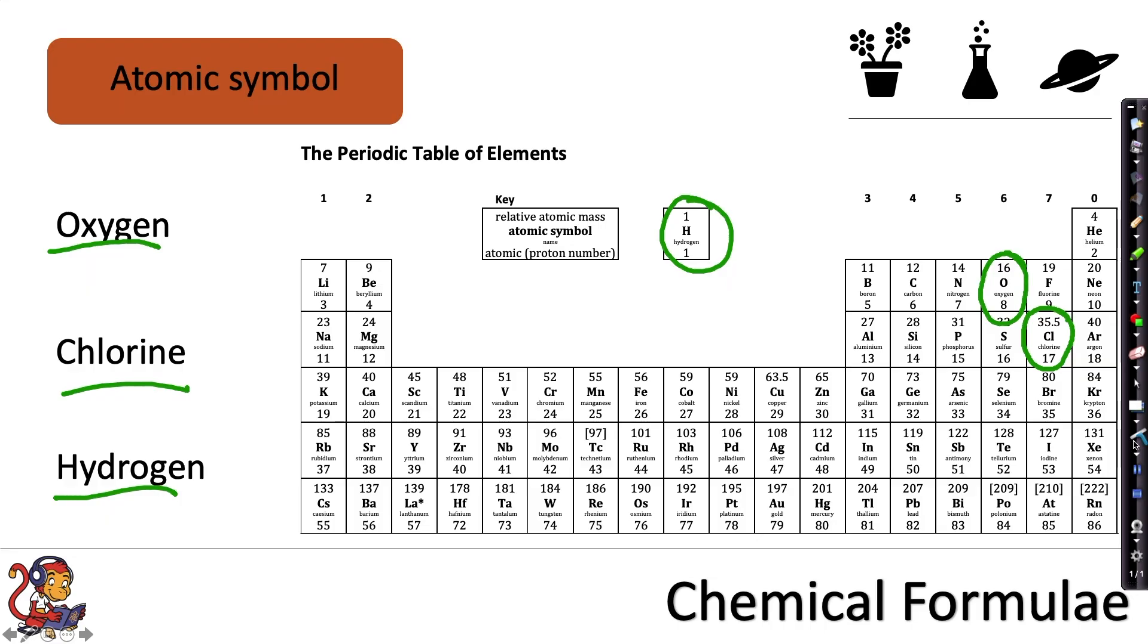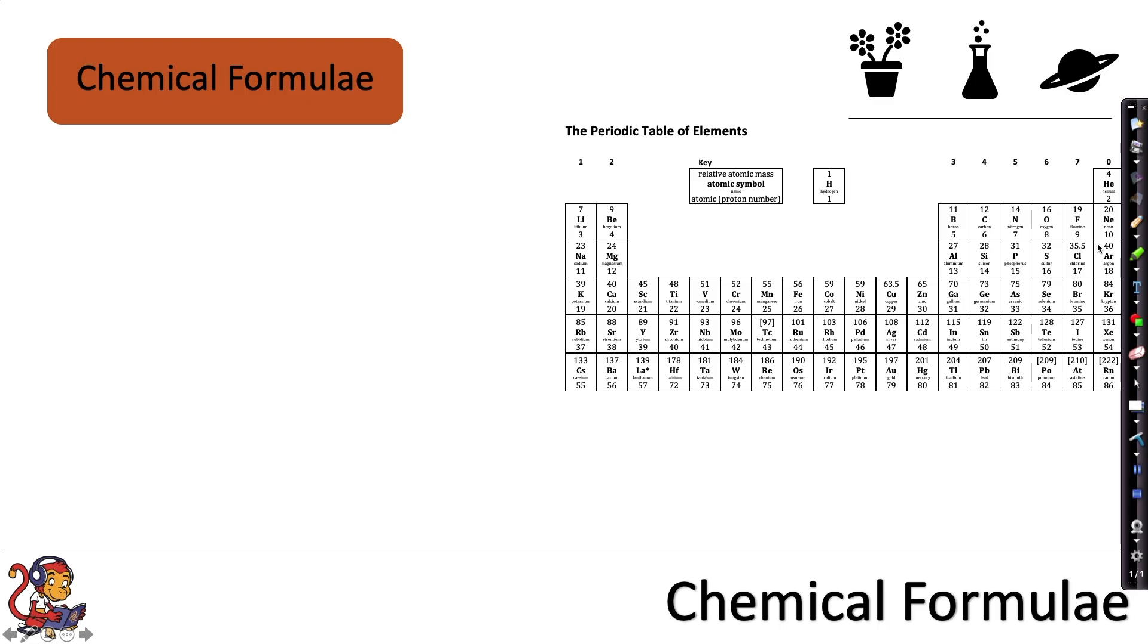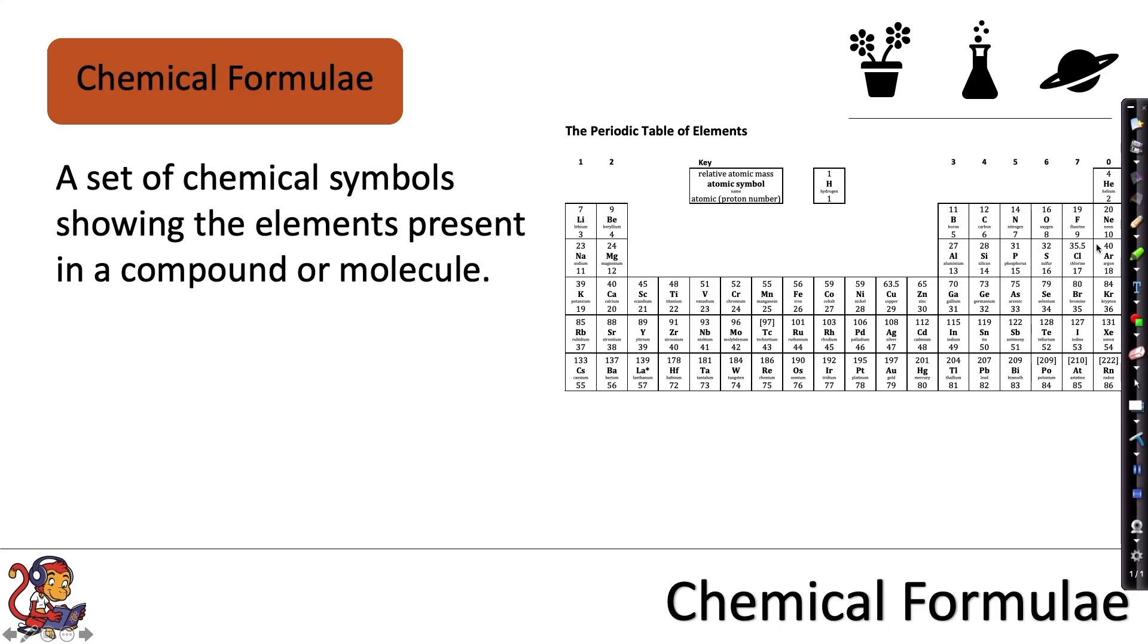In this video we're going to look at how we write the chemical formulae when these atoms bond together to make molecules or compounds. A chemical formula is a set of chemical symbols showing the elements present in a compound or molecule. For example, we would write the chemical formulae for sodium fluoride as NaF. The Na will show the sodium and the F will show fluorine is present. And this makes sodium fluoride.